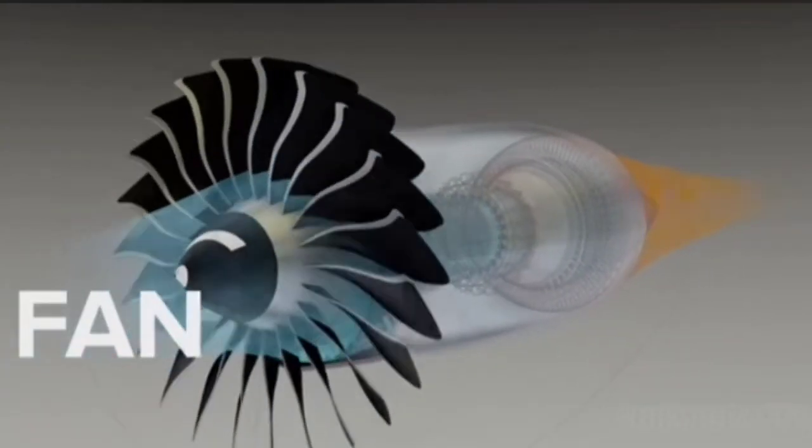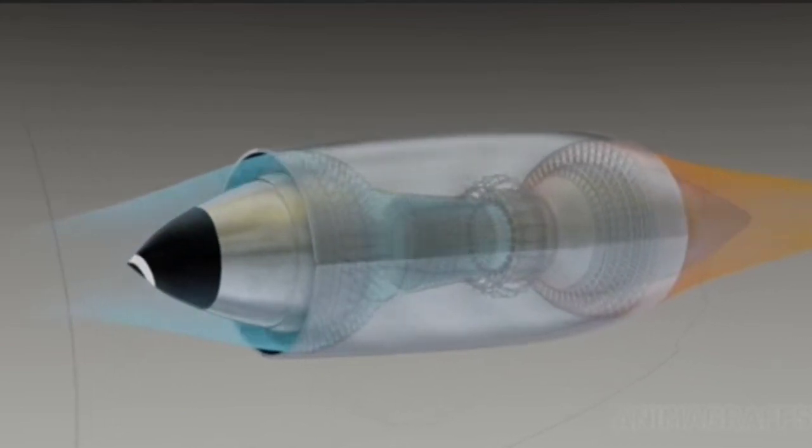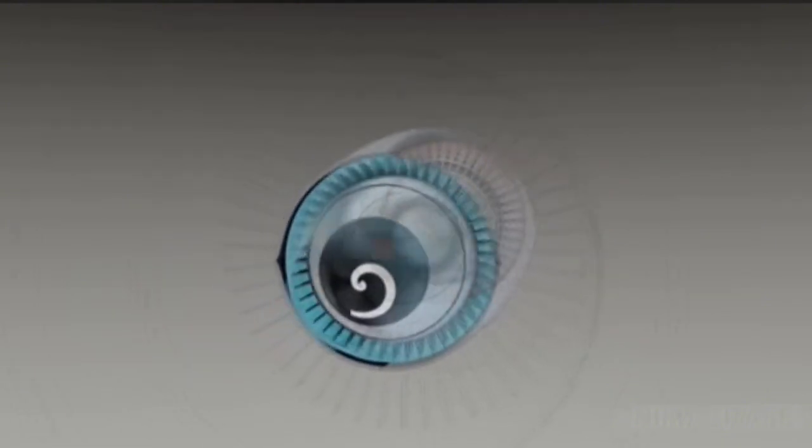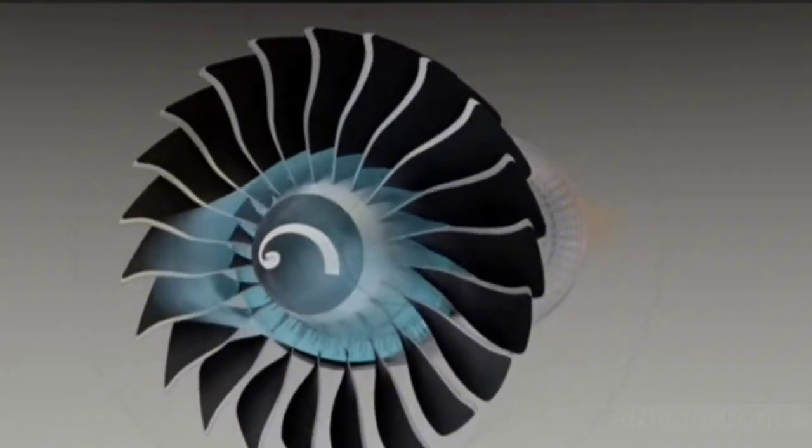Fan. Early jet engines were turbojets, where all incoming air flows through the core. Most modern wing aircraft engines are turbofans, where only a fraction of air enters the core section of the engine.